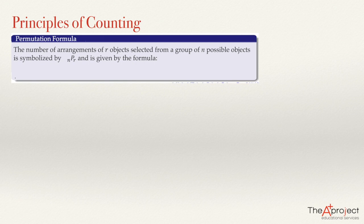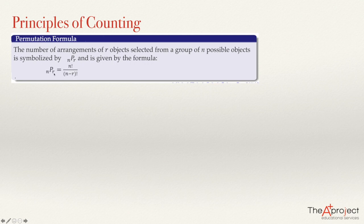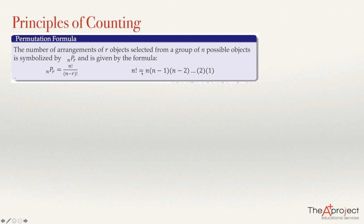Another principle of counting is the permutation formula. If we want to find the number of arrangements of r objects selected from a group of n possible objects, then we symbolize this by nPr, and we call these arrangements permutations. The number of permutations of r objects selected from a group of n elements is given by n factorial divided by n minus r factorial.